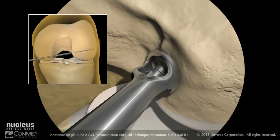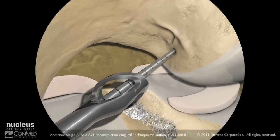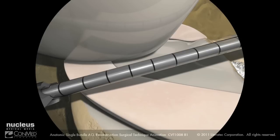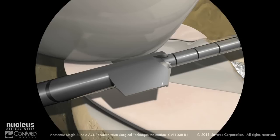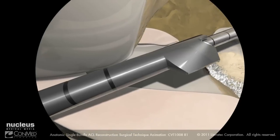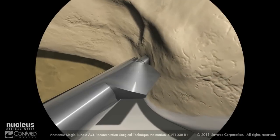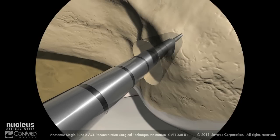Continue advancing the guide pin out through the skin laterally. Using a twisting motion, remove the femoral footprint guide. Insert the mono-fluted sentinel drill bit over the guide pin through the accessory anteromedial portal with the cutting edge facing away from the femoral condyle and advance the drill bit to the femoral ACL footprint. Using a piston-like back and forth motion, advance the sentinel drill bit to the desired depth cautiously to prevent blowout of the lateral femoral cortex.